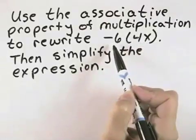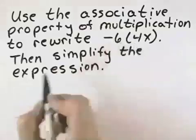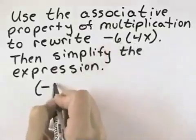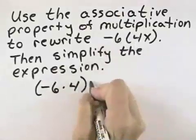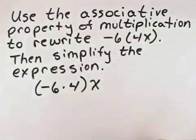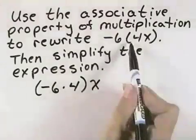And so in order to use the associative property, we would want to switch that, and we would instead want to multiply the first times the second parts of our product, and then multiply that result by x. So we've now used the associative property of multiplication to rewrite this expression.